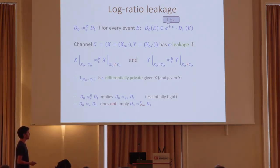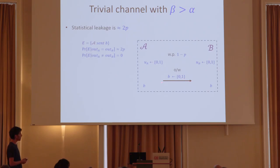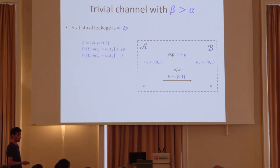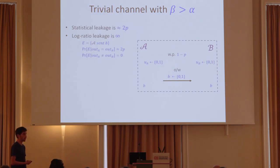Let's go back to our trivial example and measure the distance of views with log-ratio distance. Consider the event in which Alice sent the bit B. This message is sent only if Alice and Bob agree on the output. The probability of this event when they do not agree is zero, and when they agree it is some constant. So the log ratio between these two probabilities is infinity, meaning the log-ratio leakage of this protocol is infinity. This is good — we want to say that if a channel has low log-ratio leakage, it can be amplified into OT. This trivial protocol cannot be amplified into OT, so we want its log-ratio leakage to be large. Indeed it is large, and this measure captures the property we want.